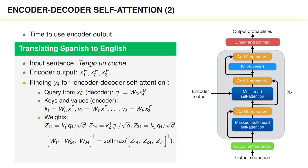After this we proceed as usual, computing weights by taking the inner product between key and query vectors and dividing by the square root of d, where d is the length of the key and query vectors, and then we take the softmax. Finally, we compute a weighted average of the value vectors. Note that we are taking a weighted average of value vectors that are determined by the output from the encoder. This means that, regardless of how good the current word embeddings in the decoder are, they can only influence the weights used when computing the average of these value vectors.